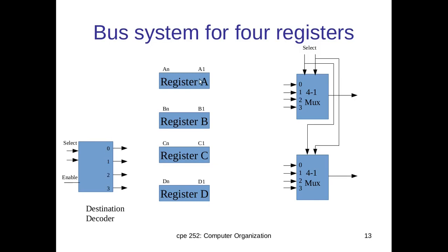To select a source register, we have to use a multiplexer. Corresponding to each bit position, there will be a multiplexer. Since the register size is n bits, we have to use n multiplexers. Then how are these multiplexers used for selecting a source register?